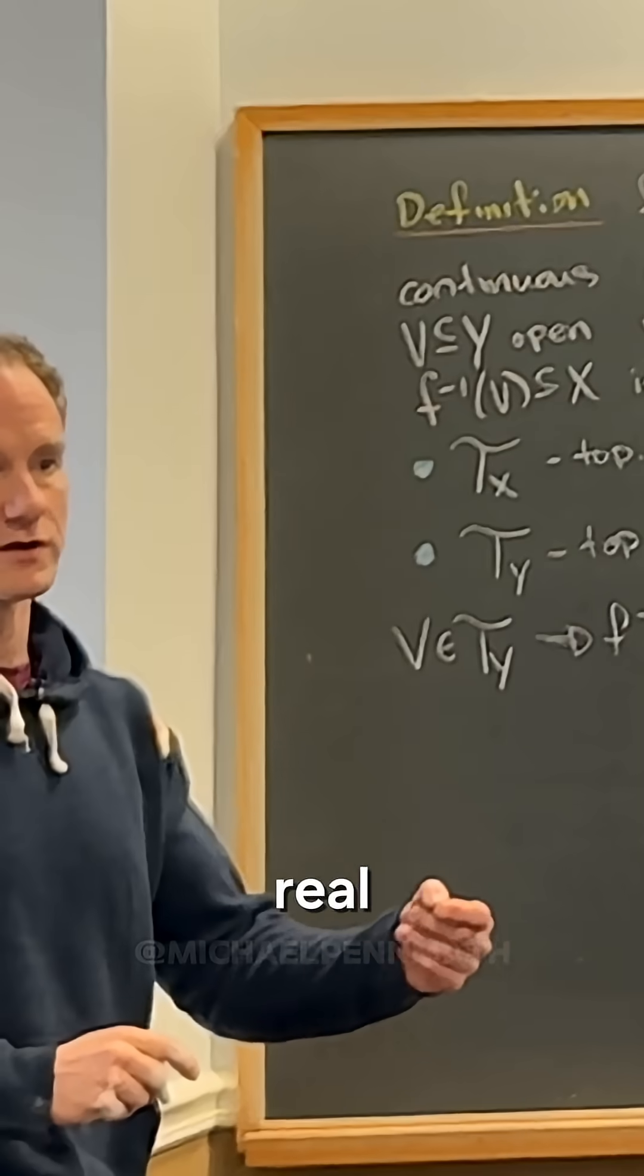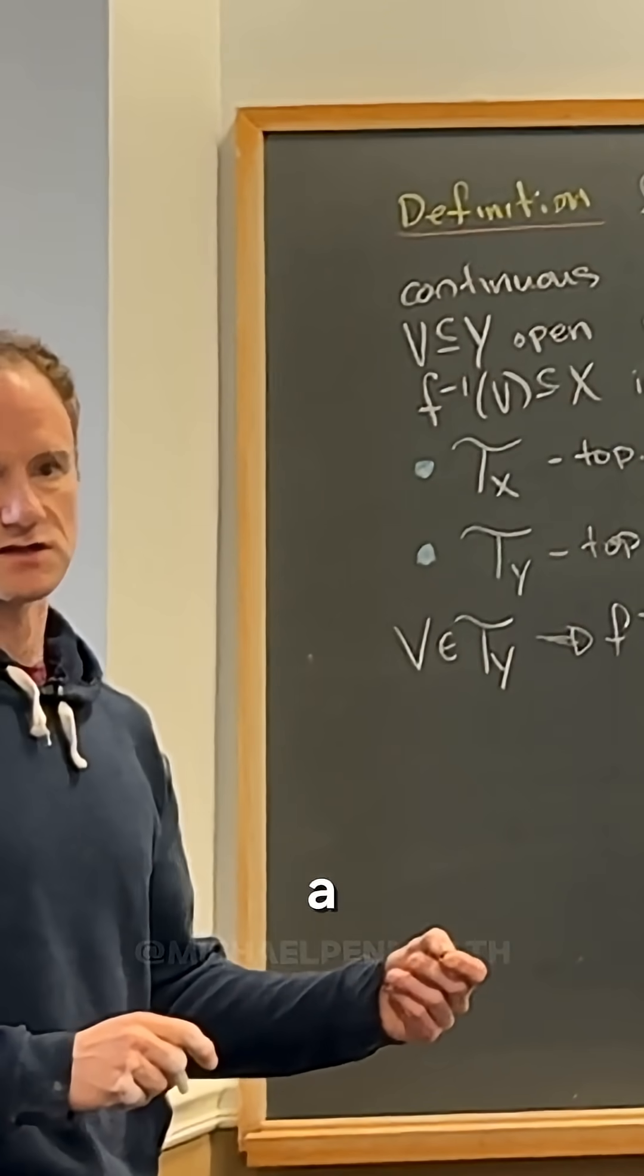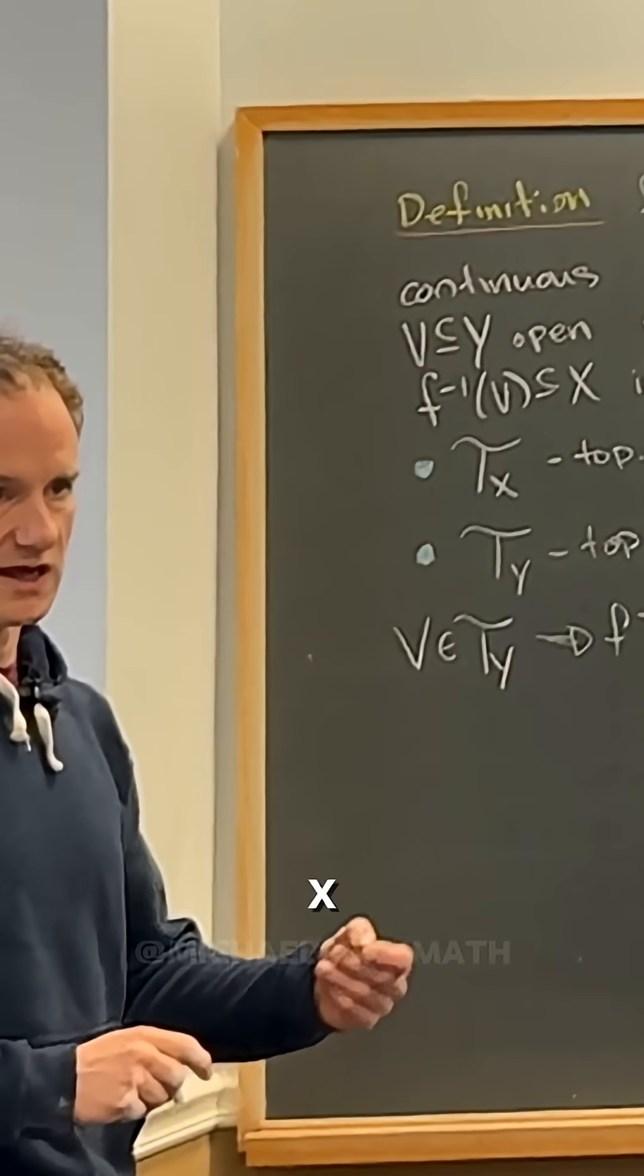Because being an element of Ty, that's equivalent to being open in Y. That's how we define open. Now in the real numbers, open is equivalent to for all x in the set there's a delta where the delta neighborhood around x is contained in the set.